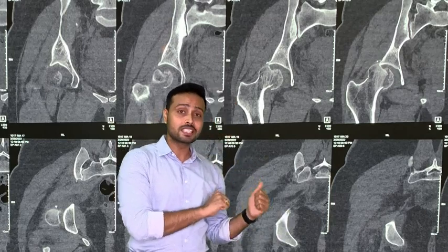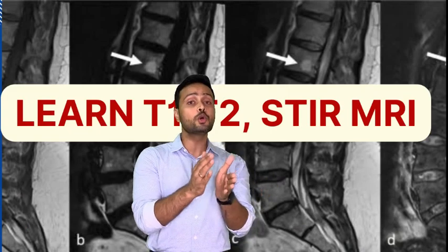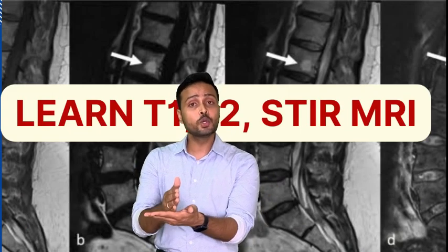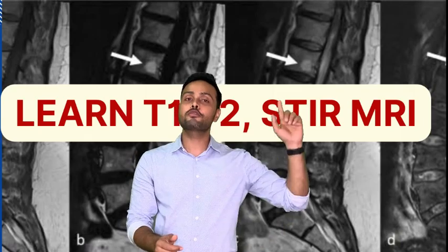Now I have one small question for all of you. Can you tell me which view this is — whether it is T1 weighted, T2 weighted, or STIR images? If you can identify this correctly, do let me know in the comments. If you don't know how to identify this, don't worry — I have made a previous video about how to differentiate T1 weighted, T2 weighted, or STIR images, and you can watch that from the link.